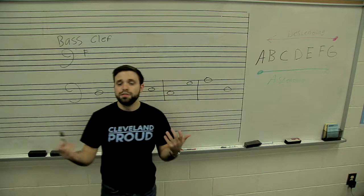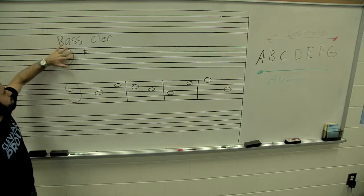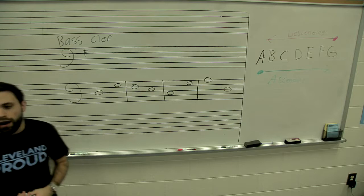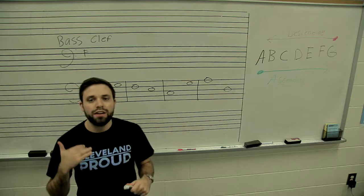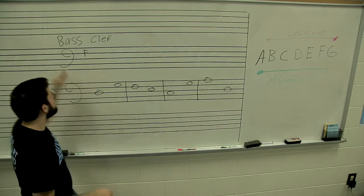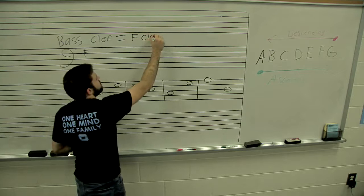So let's take a look at the bass clef. The bass clef looks like this, kind of like a C with two dots right above the fourth line. This tells us where F is. Just as the treble clef had a different name and was also known as the G clef, the bass clef is also known as the F clef.